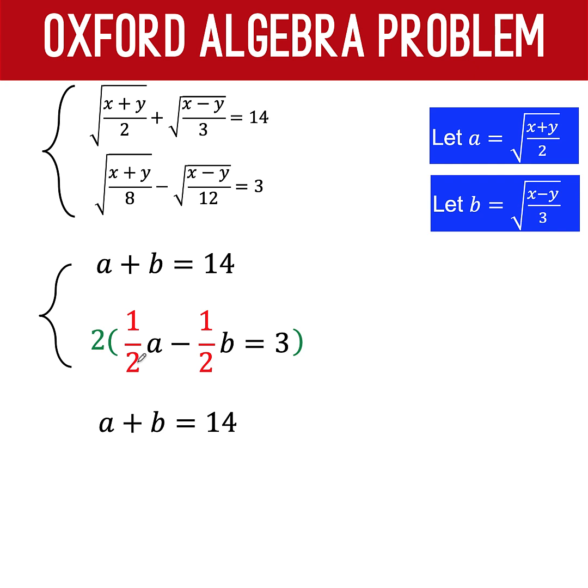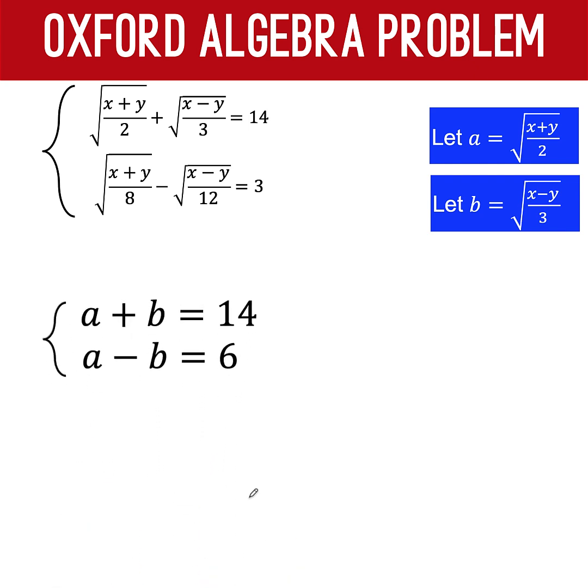So, let's copy first a plus b equals 14. And distribute 2 to each of the terms here. So, 2 times 1 half is 1 times a is a. 2 times 1 half, again, is 1 times b is b. Copy the minus sign. And 2 times 3 is equal to 6. So, these last two equations are equivalent to our original equation. With this as our substitution for a and for b.